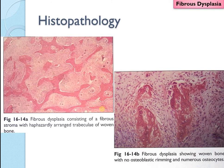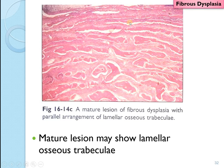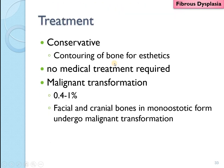There is a variation, however: in the head and neck region, you may see a trabecular pattern of lamellar bone — it may not always be woven. Multiple lamellar bone formations can be seen in head and neck fibrous dysplasia. There is no particular treatment; it is generally conservative contouring of the bone for aesthetics, with no medical treatment required. If radiation is given by mistake, it may lead to malignant transformation, accounting for 0.4 to 1% of osteosarcoma development. Facial and cranial bones in the monoostotic form are the most likely candidates for malignant transformation.